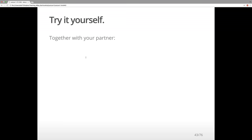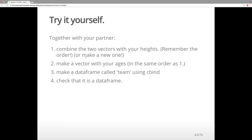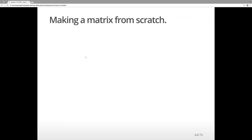Try it yourself with your partner. Make two vectors with your heights, then a vector with your ages in the same order. Make a data frame called 'team' using cbind(), and check that it is a data frame. You can also make a matrix from scratch — pause the recording and have a go.